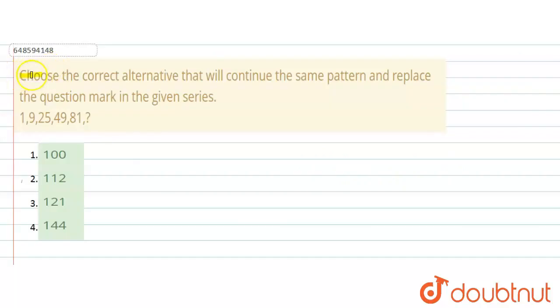The question says: choose the correct alternative that will continue the same pattern and replace the question mark in the given series. The series is 1, 9, 25, 49, 81, question mark. Options are 100, 112, 121, and 144.